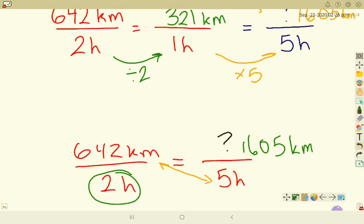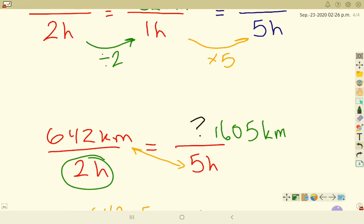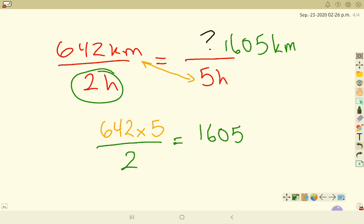So two ways to solve it. You can turn it into a unit rate, and then figure out how far you go in that specific amount of time. But we can also use what we call proportional reasoning, where we set up two equal fractions.